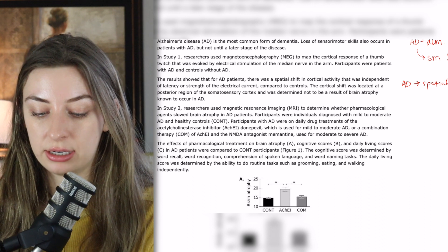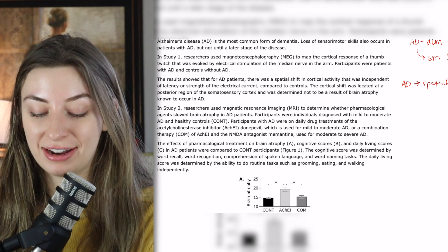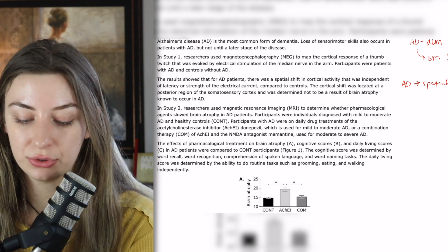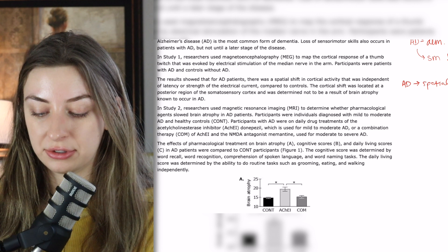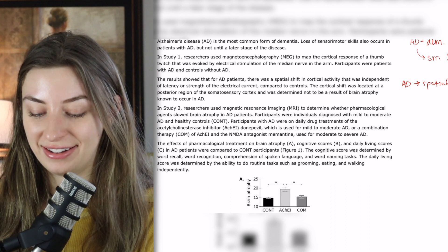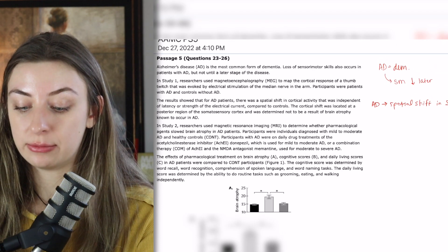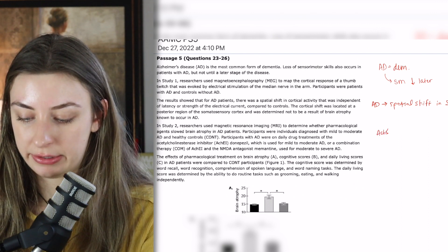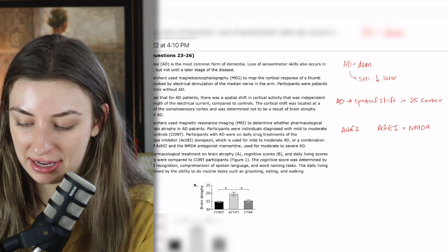In study two, researchers used MRI to determine whether pharmacological agents slowed brain atrophy in Alzheimer's patients. Participants were individuals diagnosed with mild to moderate Alzheimer's and healthy controls. Participants with Alzheimer's were on daily drug treatments of an acetylcholine esterase inhibitor, and the NMDA antagonist memantine used for moderate to severe Alzheimer's. I want to make sure I keep those groups straight — either the acetylcholine esterase inhibitor alone, or that plus the NMDA antagonist.